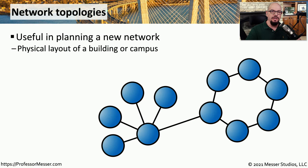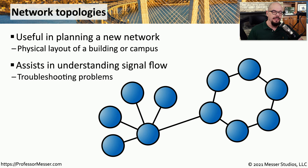When you're designing, building, or troubleshooting a network, you'll be using a network topology type that can vary depending on the technology you're using. If you're looking to understand the way the data is flowing, or you want to plan to create a new type of network, then it's useful to understand what these topologies might be. This is also useful during the troubleshooting process, because you'll know exactly what flow the traffic takes to get between point A and point B.